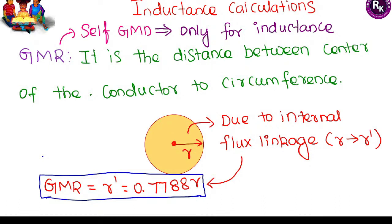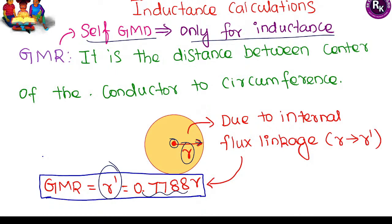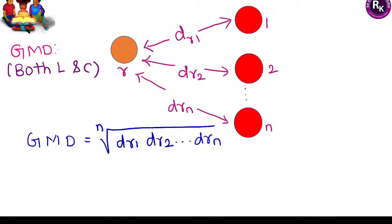For inductance calculations, we use GMD (Geometric Mean Distance) and GMR (Geometric Mean Radius, also called self-GMD). Self-GMD calculations are done only for inductance — not for capacitance calculations. GMR is the distance from the center to the surface of the conductor. Due to internal leakage flux, we use an effective radius of 0.7788 times the original radius for GMR, rather than the actual radius.